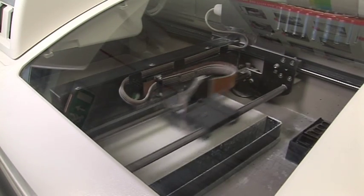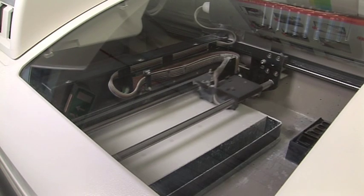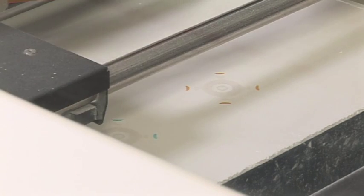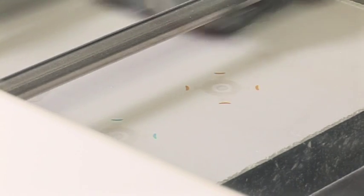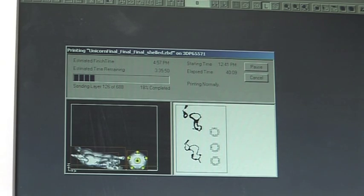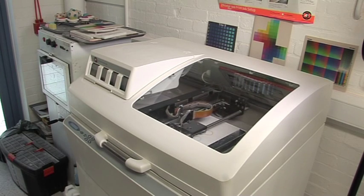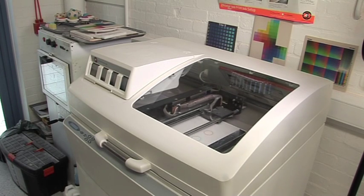The printer works by inkjetting binder onto a powder bed. The software has sliced the model into layers and each layer is sent sequentially to the printer. As the first layer is printed, the build bed drops and another layer of powder is spread across the bed. The unbound powder supports the bound area as it's being printed and the model is built up in the bed over time.